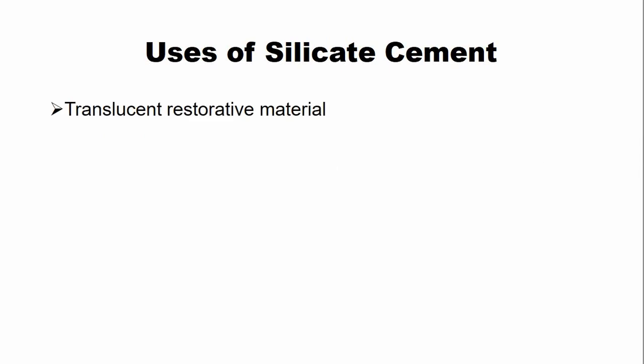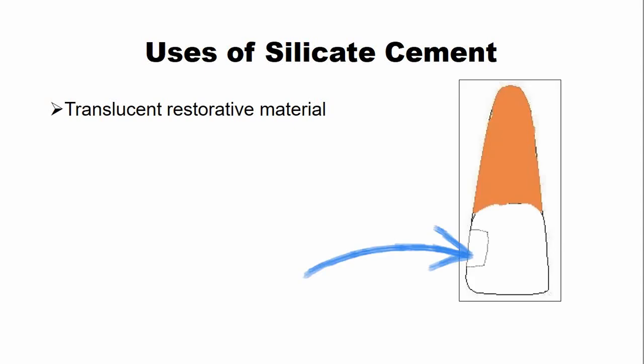The clinical applications and uses of silicate cement: silicate cement is a translucent restorative material that was used in the aesthetic zone before the introduction of resin composite and glass ionomer cement. It is used in the anterior region in less load-bearing areas.